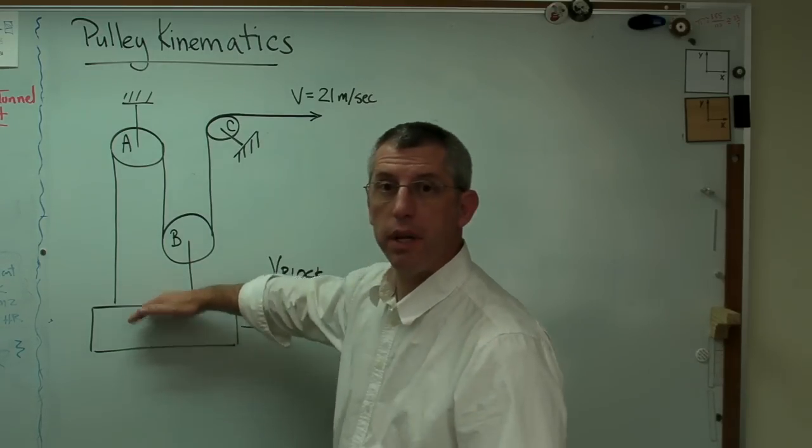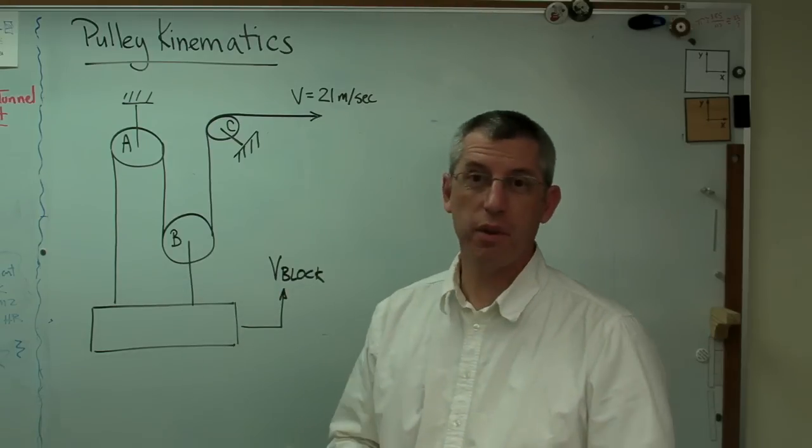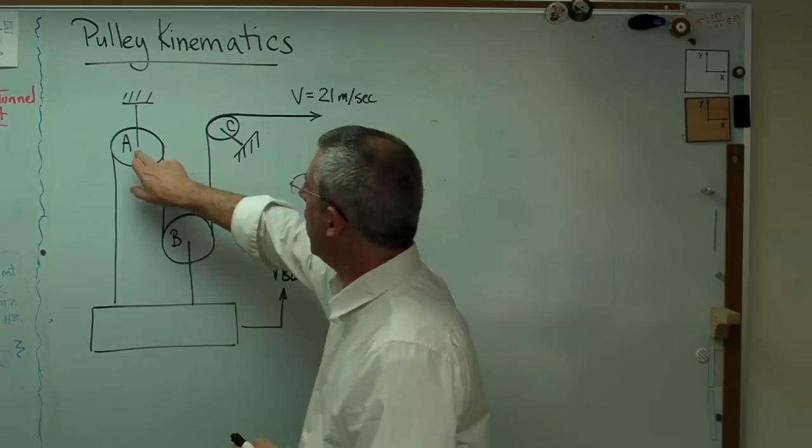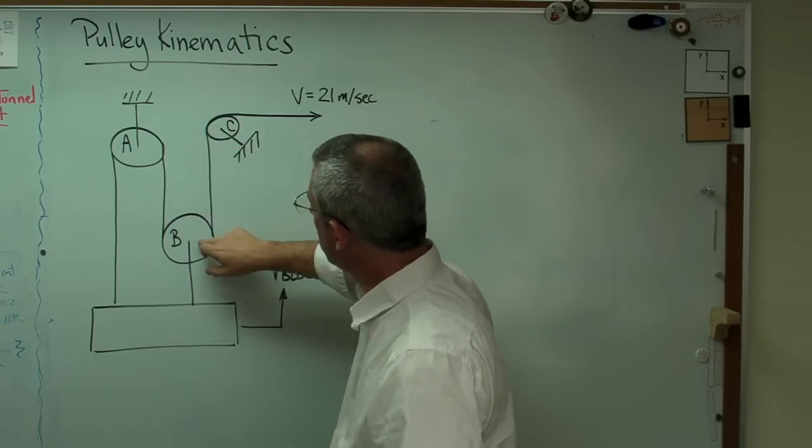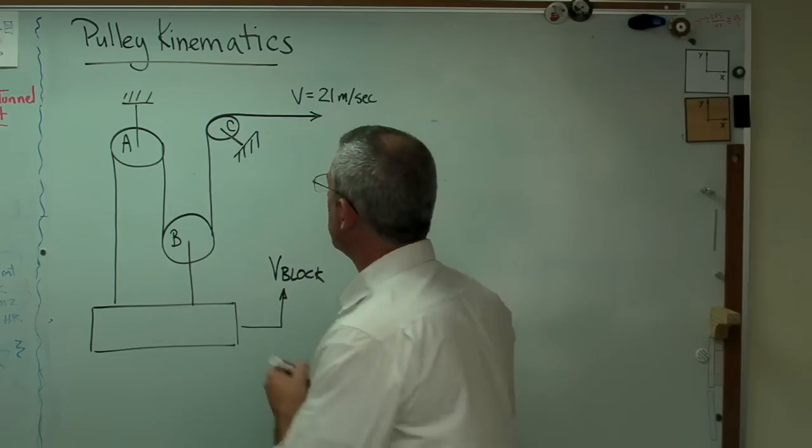We've got a block here that's being lifted by an arrangement of pulleys. I've labeled the pulleys A, B, and C. A doesn't move, C doesn't move, and B is attached to the block with a rigid link here. That link right there doesn't move, it doesn't change shape.